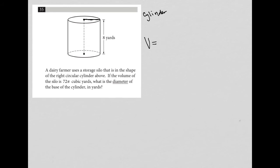V = 72π cubic yards. What is the diameter of the base of the cylinder in yards?